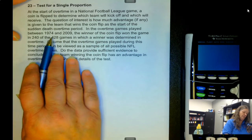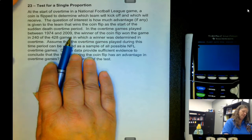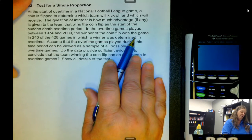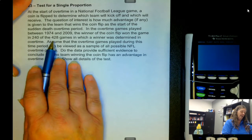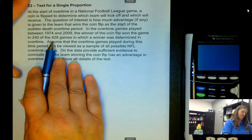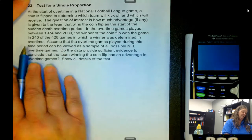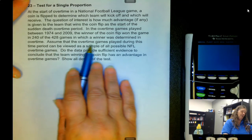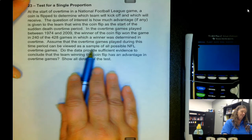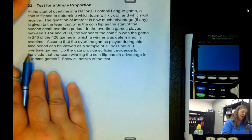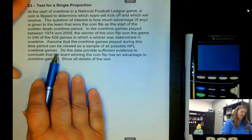In overtime games played between 1974 and 2009, the winner of the coin flip won the game in 240 of the 428 games in which a winner was determined in overtime. Assume that the overtime games played during this time period can be viewed as a sample of all possible NFL overtime games.